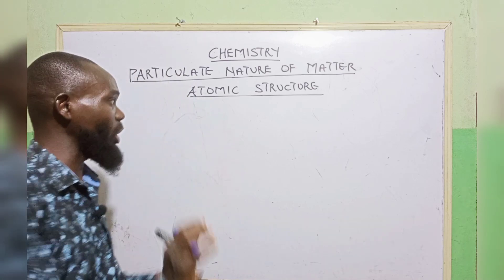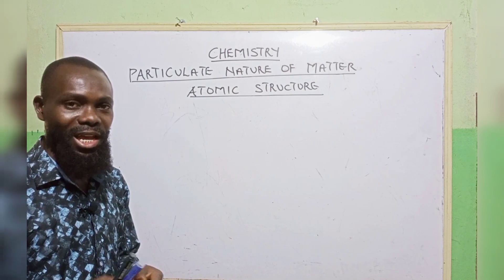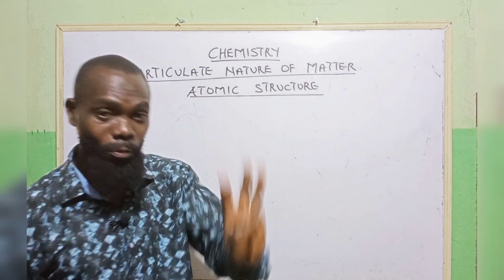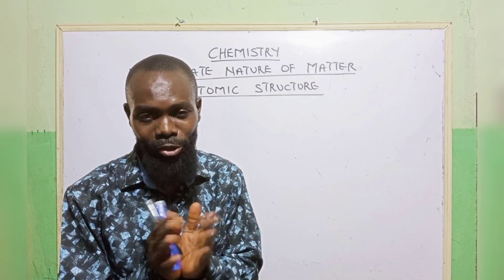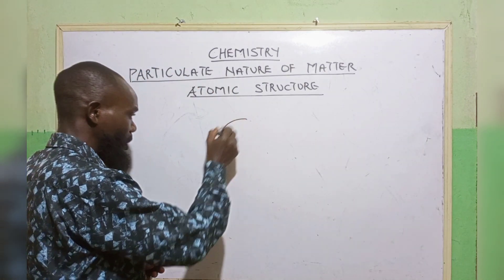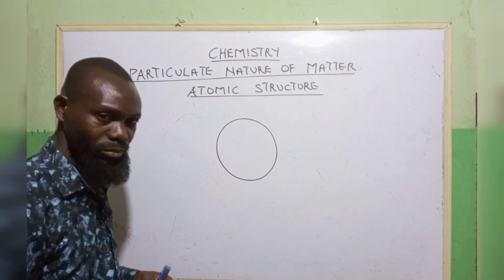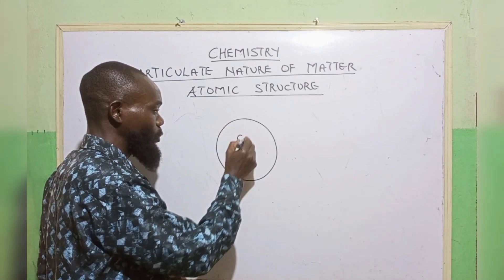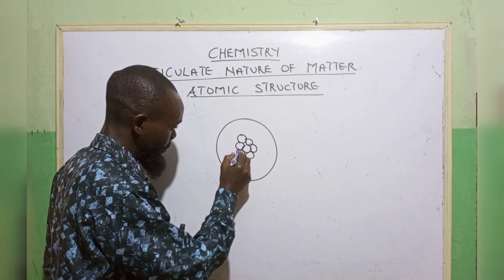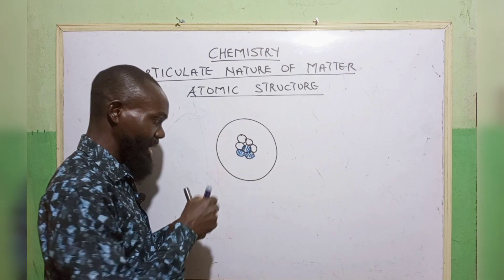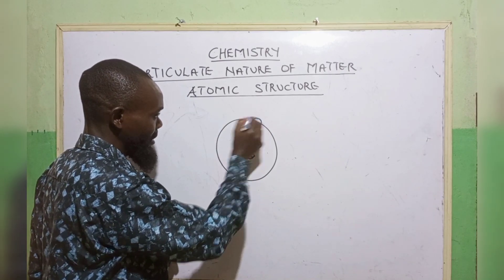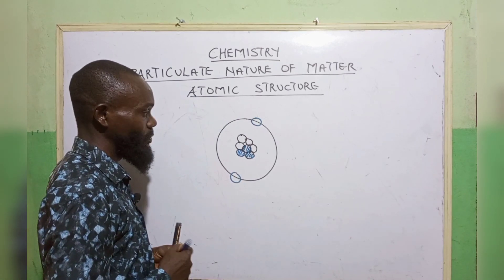Now, we want to study the structure of an atom, because it is very important. An atom, being this smallest particle of an element, is made up of three subatomic particles. But before we mention the subatomic particles, how does this atom look like? An atom looks like a circle. Inside the circle, we have some particles, and outside these particles, we have another particle here. This is a structure of an atom.